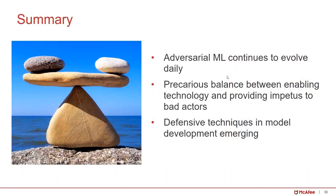In summary, AI systems are vulnerable, and we should work towards securing them. Adversarial machine learning continues to evolve daily, and there is a precarious balance between enabling the technology and providing impedance to bad actors. Defense mechanisms and techniques in model development are also emerging. We are hoping to have more robust systems in the future so that machine learning and AI can be safely adopted even in an adversarial setting. Thank you for your attention.